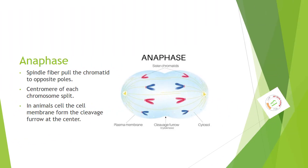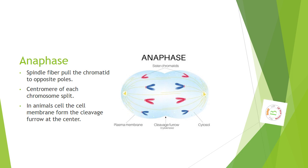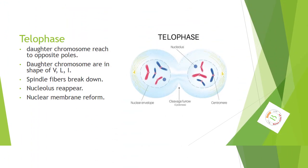Anaphase. Spindle fibers pull the chromatids to opposite poles. The centromere of each chromosome splits. In animal cells, the cell membrane forms a cleavage furrow at the center.